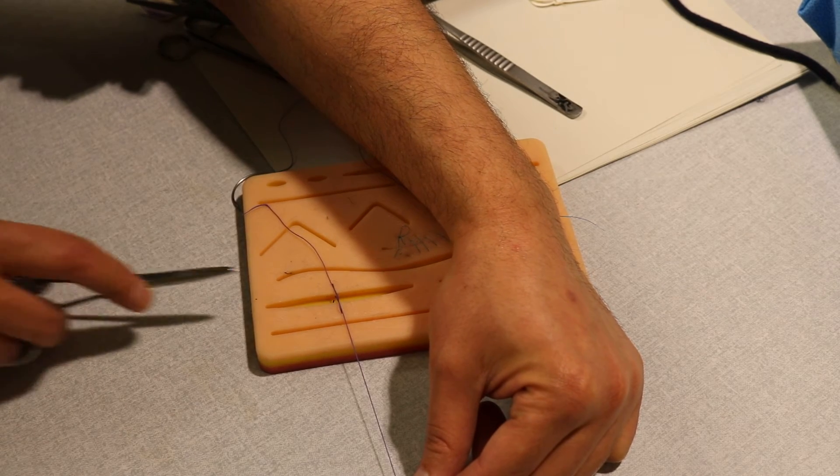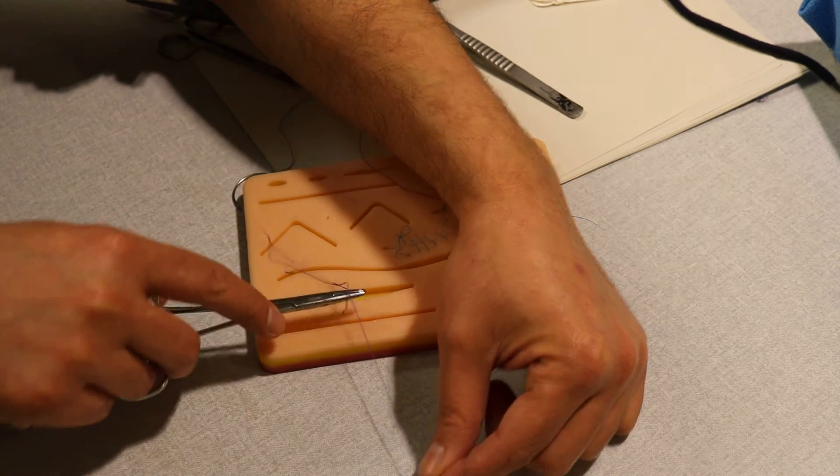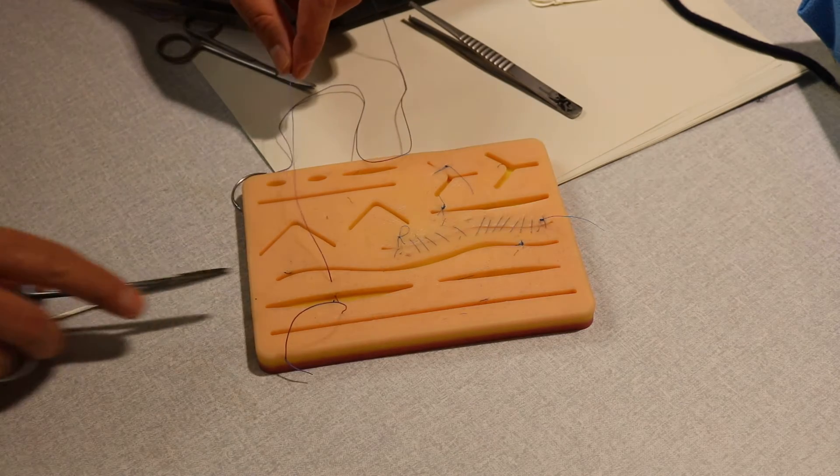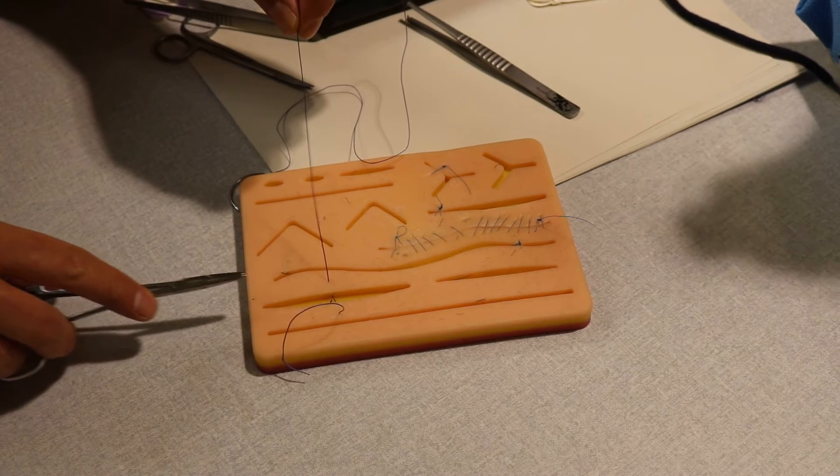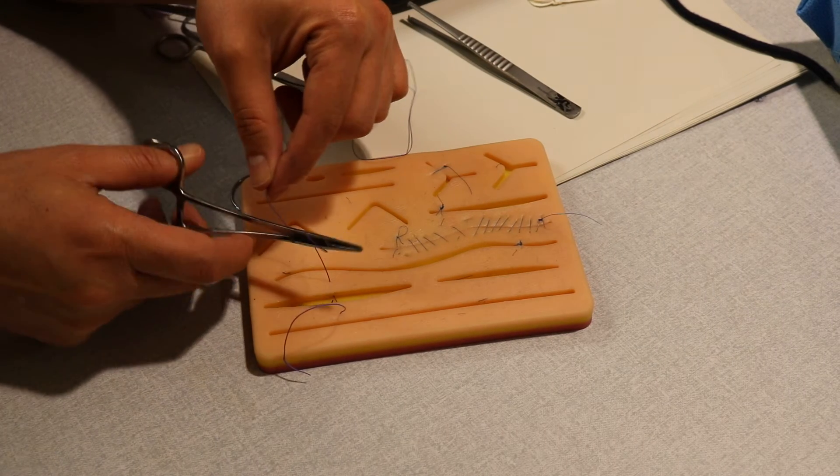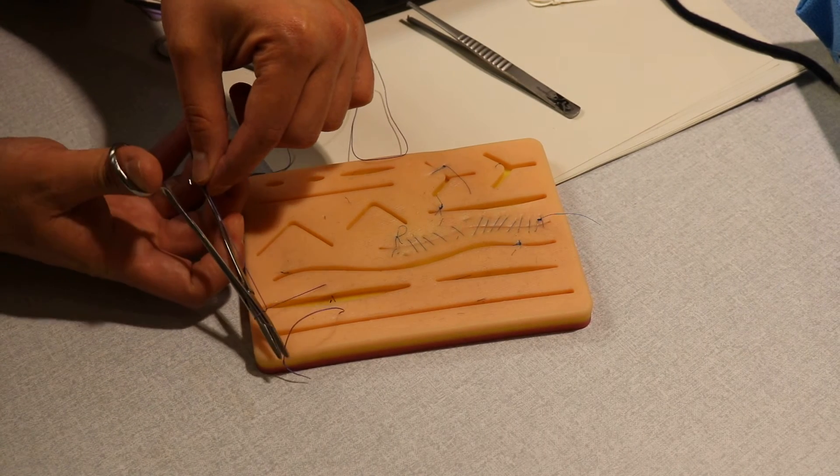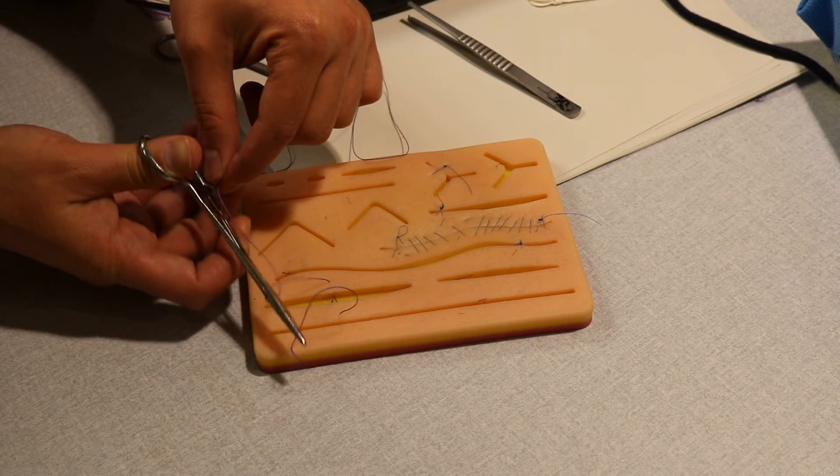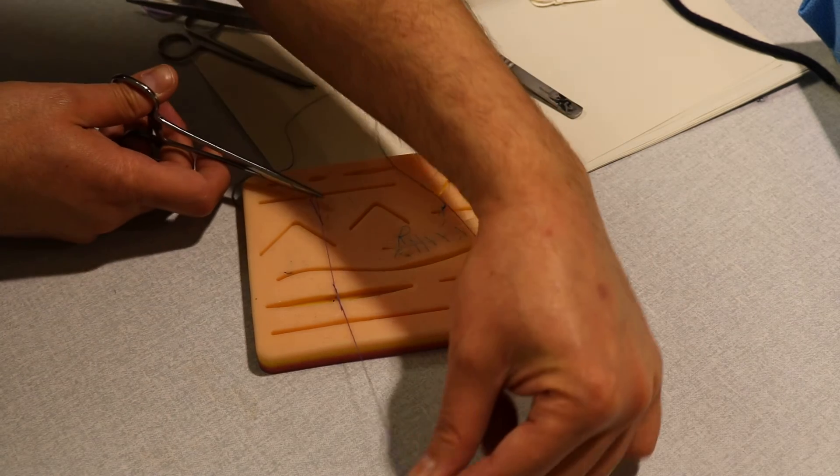That's the first one. The second one: fine, again, one loop here. Go in the middle parallel to the wound and go with the tip to hold the tip again. Bring that side to the other side, switch them.